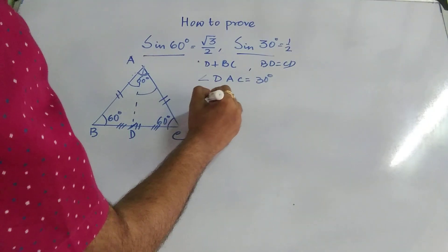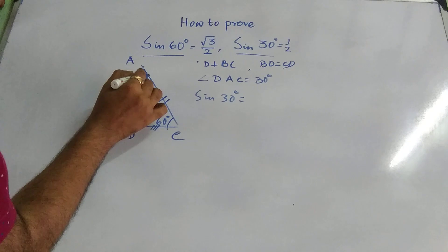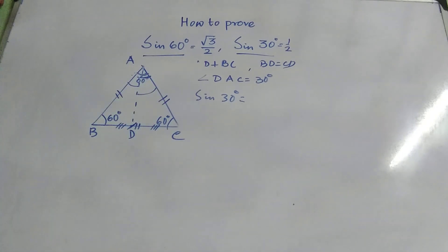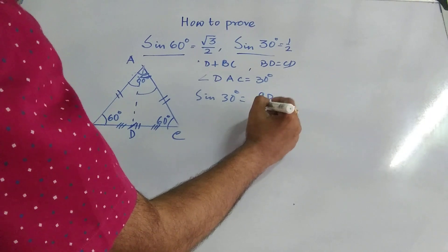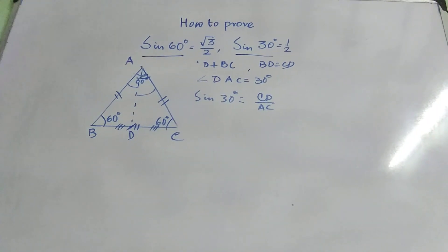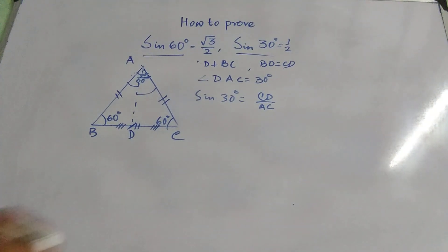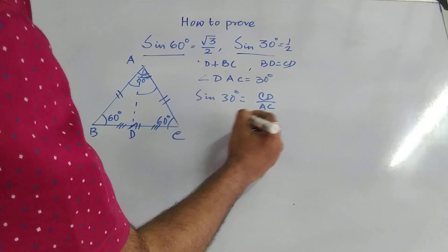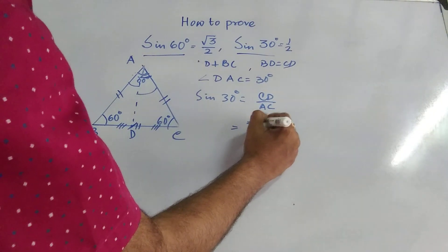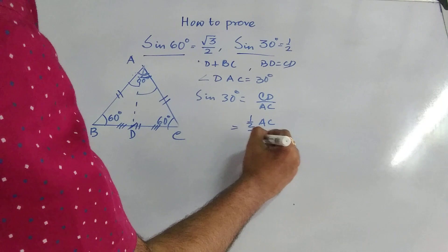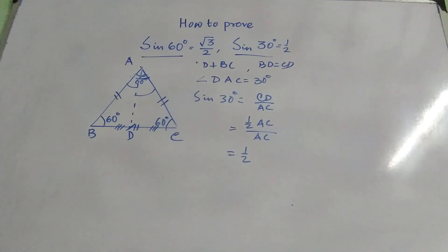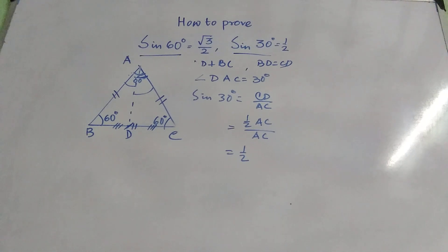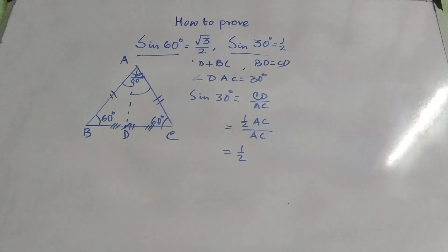So angle DAC equal to 30 degree. So sin 30 is nothing but, again, if we have to calculate sin of this angle, then it should be CD by AC. CD is nothing but half of AC. Already we have seen in the previous part, it is half of AC, that is by AC and it is simply half. So this way we can find it out, sin 30 equal to half and sin 60 equal to root 3 by 2.